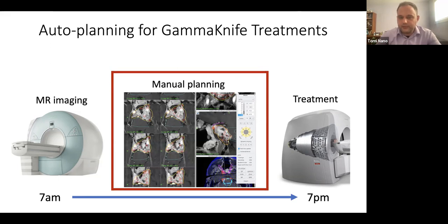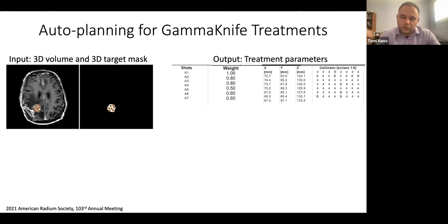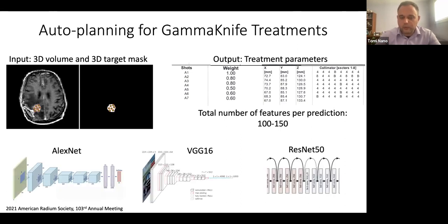For gamma knife treatments, the parameters are 'shots' — placements of where radiation will be delivered. Each shot has a particular weight, a location, collimator settings, and other parameters. For each case we're looking at around 100 features that have to be optimized before treatment can be delivered, and that's where we're using deep learning to try and predict the optimum parameters for these treatments.